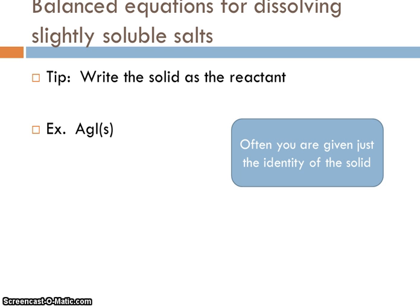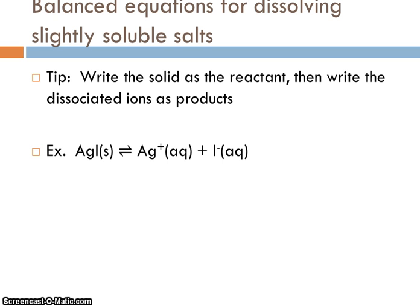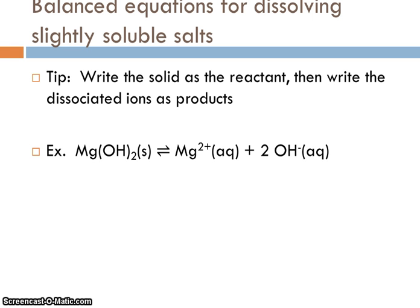To do these problems successfully, you need to start with a balanced equation. You're given the identity of the solid, and that solid is the reactant. For silver iodide, when it dissociates, it forms silver ions and iodide ions in a one-to-one ratio. For magnesium hydroxide, there are two hydroxides for each magnesium ion in the solid, so you write a coefficient of two in front of hydroxide. The ions are the products; the solid is the reactant.